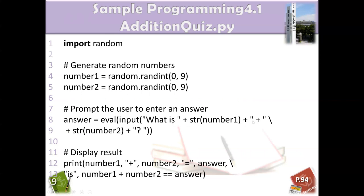You might wonder why there are so many plus signs. This string and this string represent number one and number two, and this is the real arithmetic plus we want to display. The other plus signs just connect the strings together. This is the string concatenation symbol — it connects this part to this part.